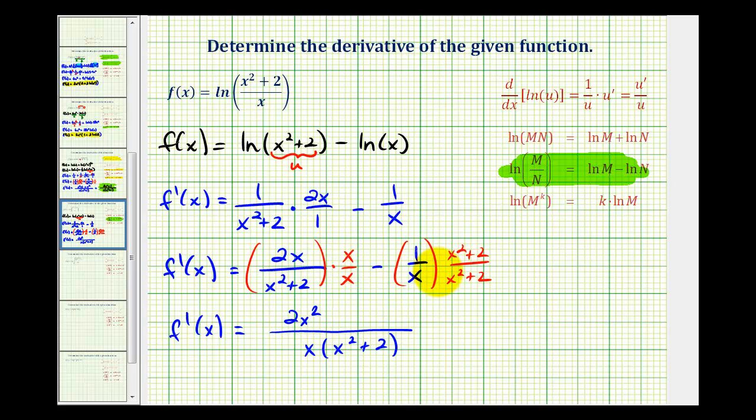And then we have to be a little bit careful here because we're subtracting this product. So we'll have minus x squared minus two. So this will be x squared minus two.